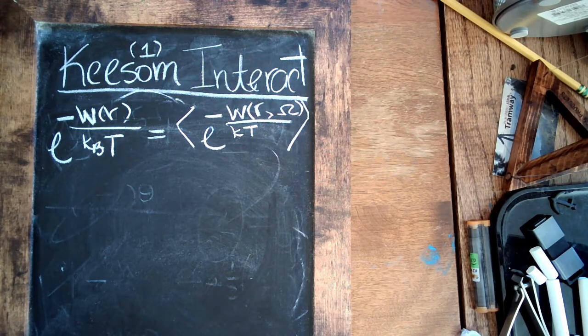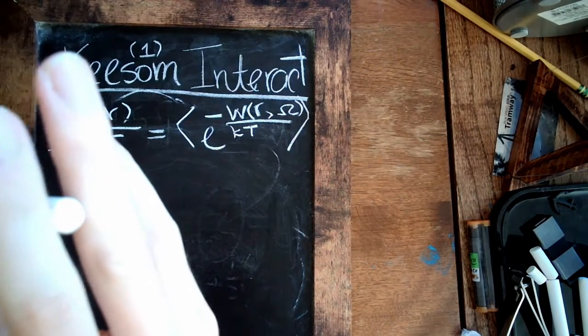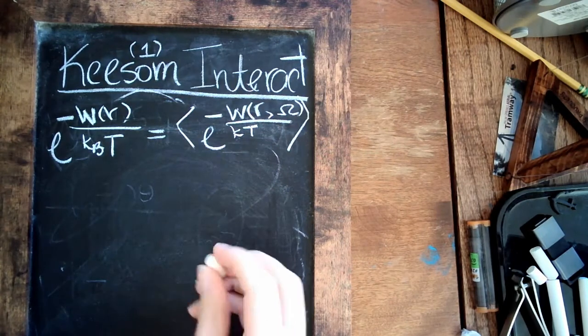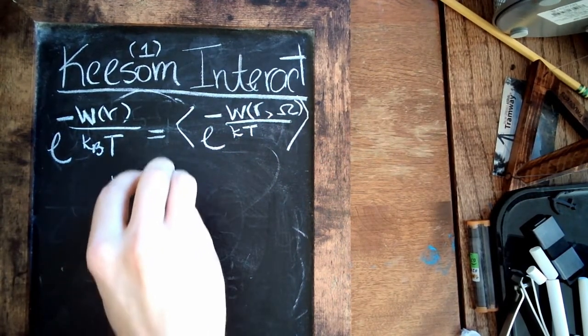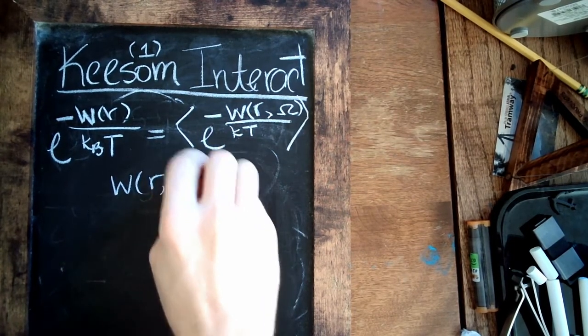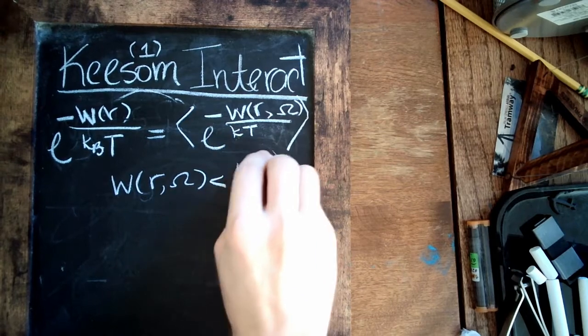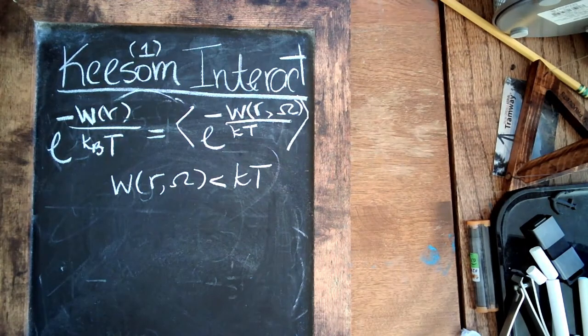Now what we're saying is this Keesom interaction is the weak version of this dipole-dipole interaction in which they're free to rotate. So in that case, W(r,omega) is going to be small compared to thermal energy. Accordingly, we can expand both of these exponents and continue equating them.